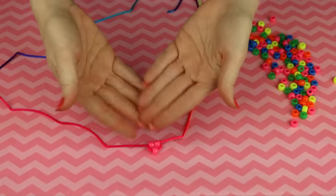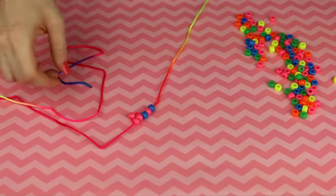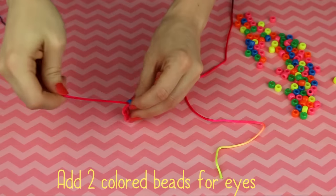Okay, I just made the nose. See, super easy. Continue that process adding two colored beads for the eyes and then two more pink for the neck.